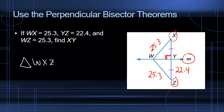According to the perpendicular bisector theorem, if line M — and we've got two points here on line M, W and Y — is a perpendicular bisector of XZ, then XY is going to equal YZ. So XY, which we're asked to find, is equal to YZ, which is 22.4.